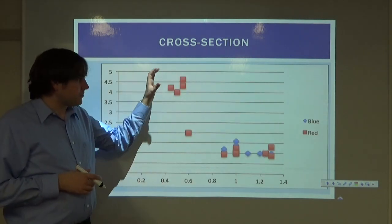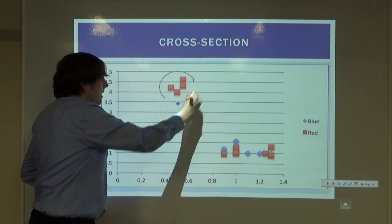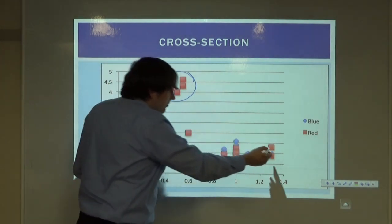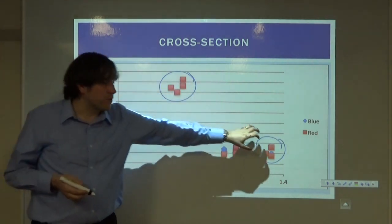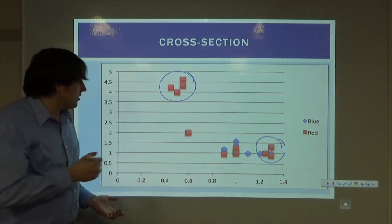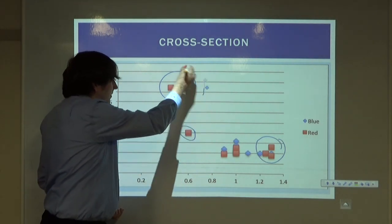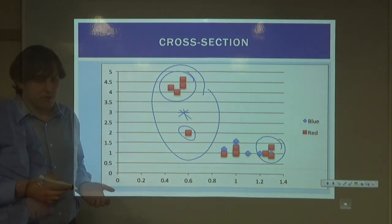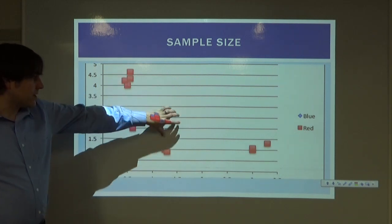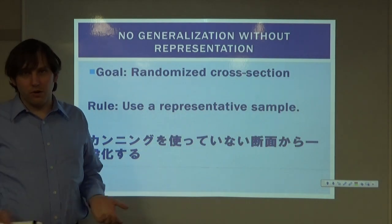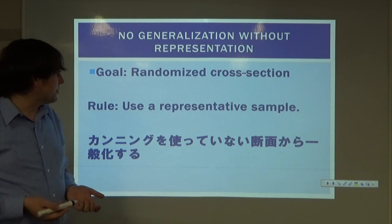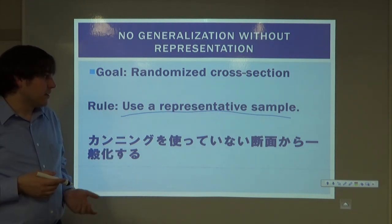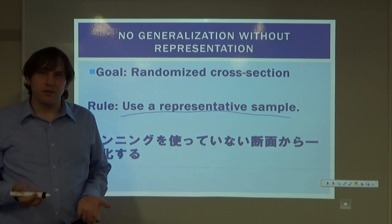Our goal is a randomized cross section — we want to use a representative sample and generalize from data that adds up rather than from biased or cherry-picked sources. Depending on how much data we use and where we take it from, our results can change significantly. The more data points we take, the better the results we can get.